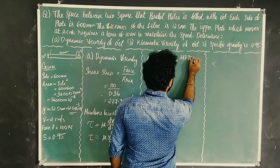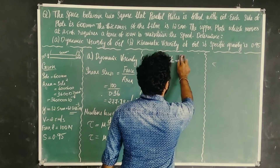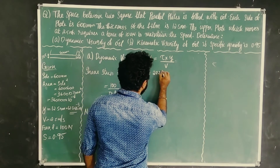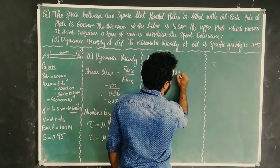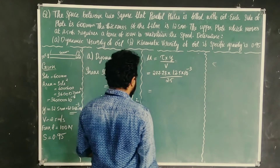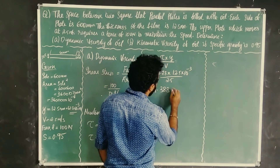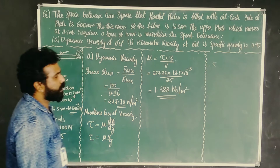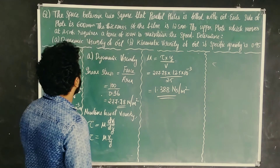Substituting values: tau is 277.78, y is 12.5 × 10⁻³ m, and v is 2.5 m/s. The dynamic viscosity mu comes out to 1.388 N·s/m², so dynamic viscosity is 1.388 N·s/m².